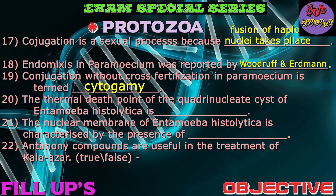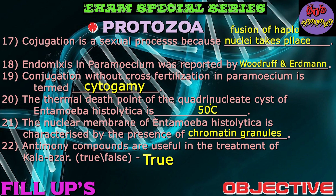Question number twenty: The thermal death point of the quadrinucleate cyst of Entamoeba histolytica is 50 degrees Celsius. Question number twenty-one: The nuclear membrane of Entamoeba histolytica is characterized by the presence of chromatin granules. Question number twenty-two: Antimonic compounds are useful in the treatment of Kala-azar — correct answer is true. Question number twenty-three: The vector of Leishmania donovani is Sandfly — a very important question.